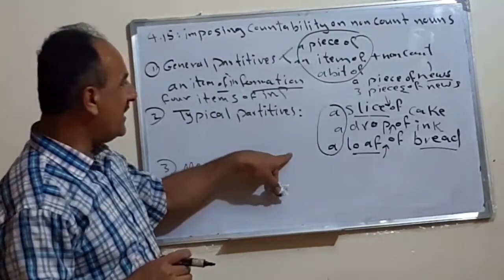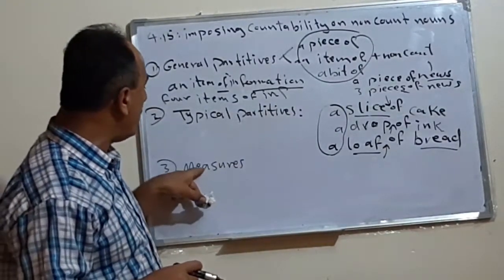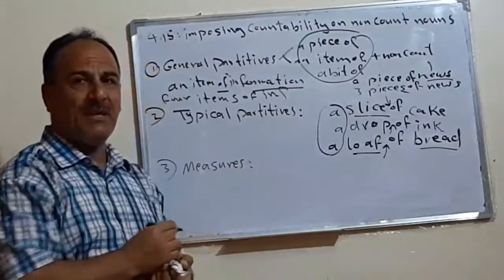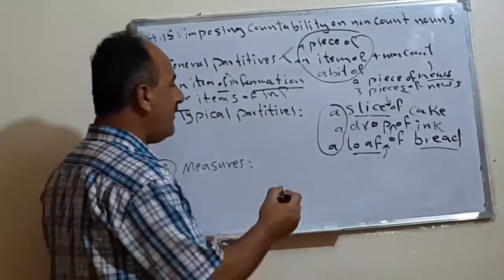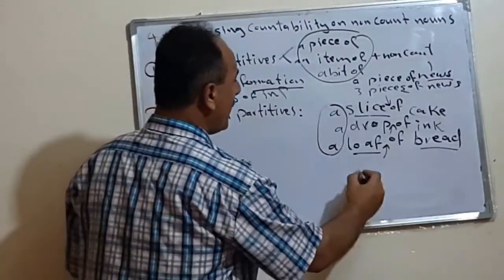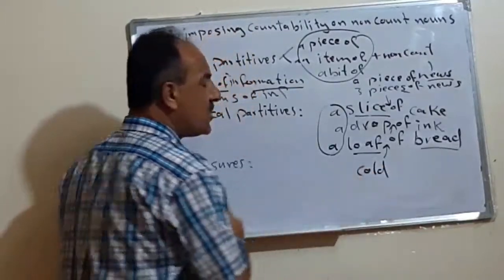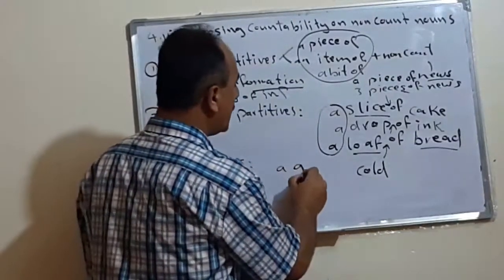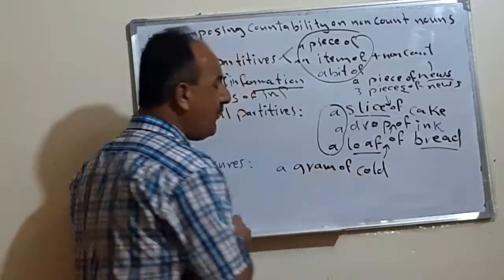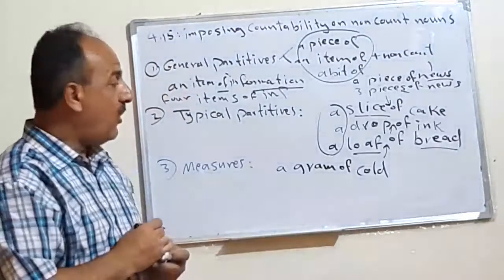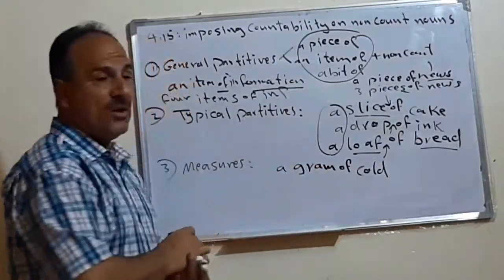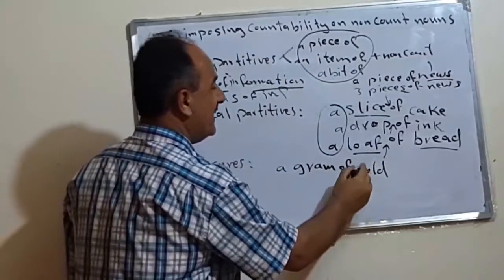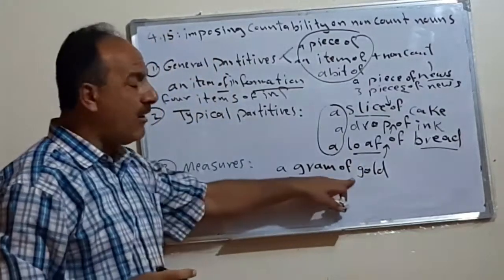So this is the second, the second time. The third time is what we call measures. The same thing, imposing. But here, we take measures. Means, for example, if we have, let's say, gold, the word gold. So generally, we deal with golds either with what? For example, a gram. A gram of gold. A gram of gold. Why? Because we use, with gold, gold. So we say a gram of gold.